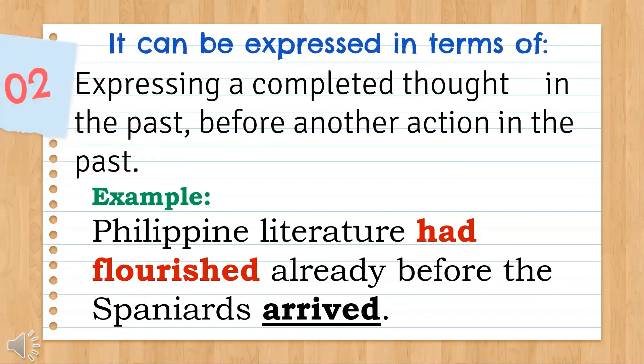The second use is expressing a completed thought in the past before another action in the past. Example: Philippine literature had flourished already before the Spaniards arrived. 'Had flourished' is the first completed action; 'arrived' is another action in the past.